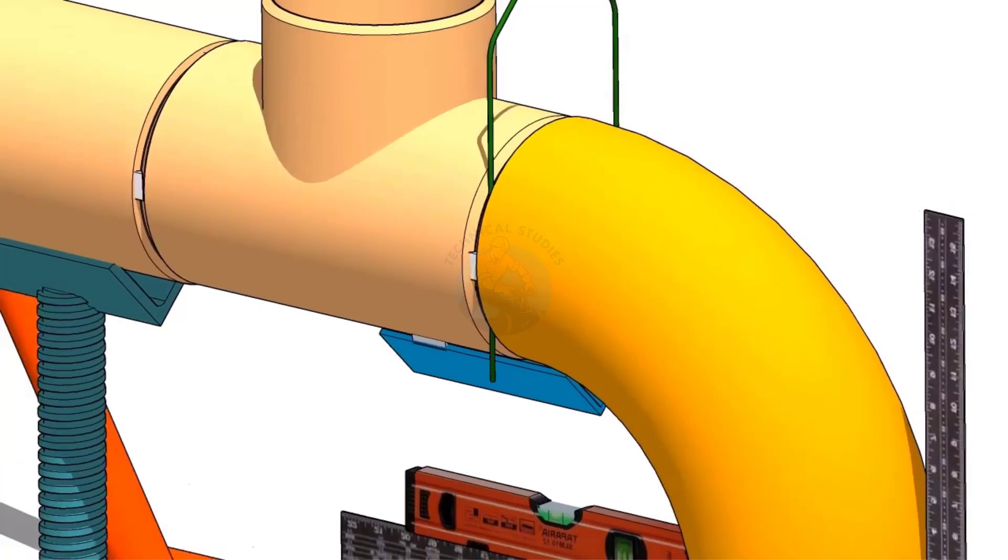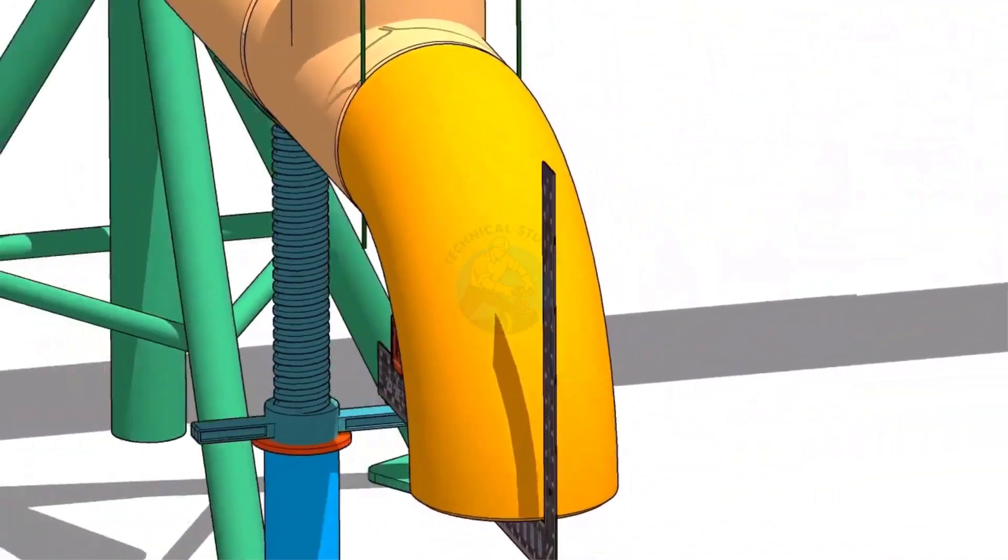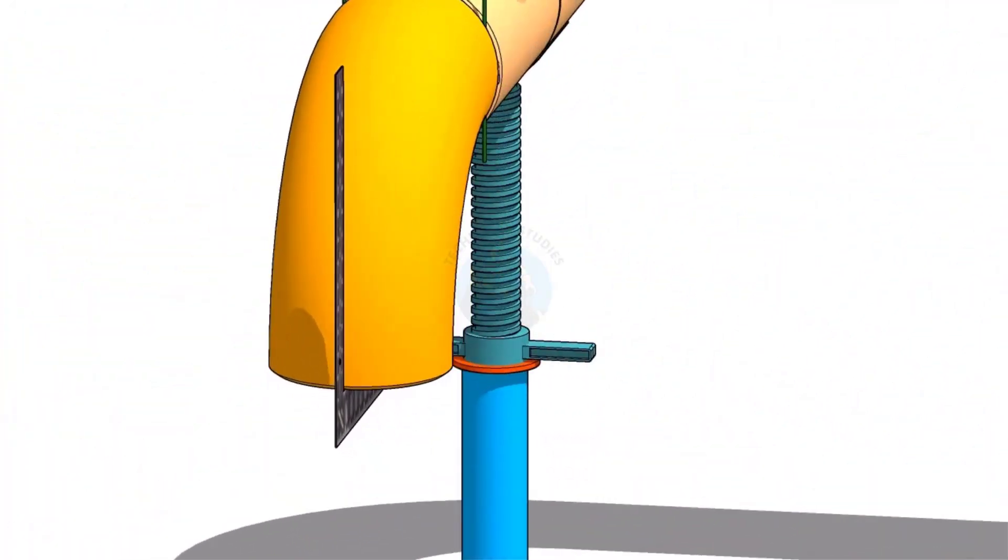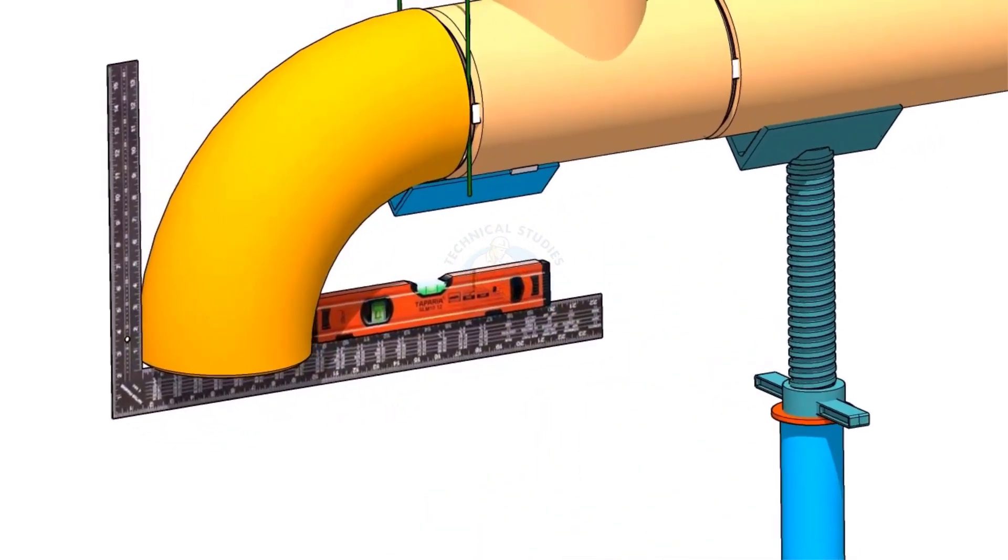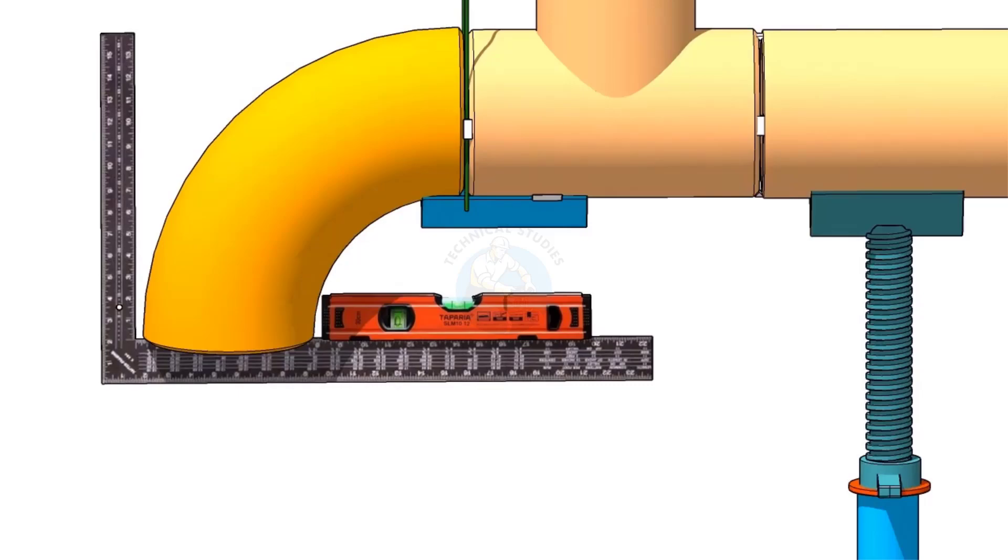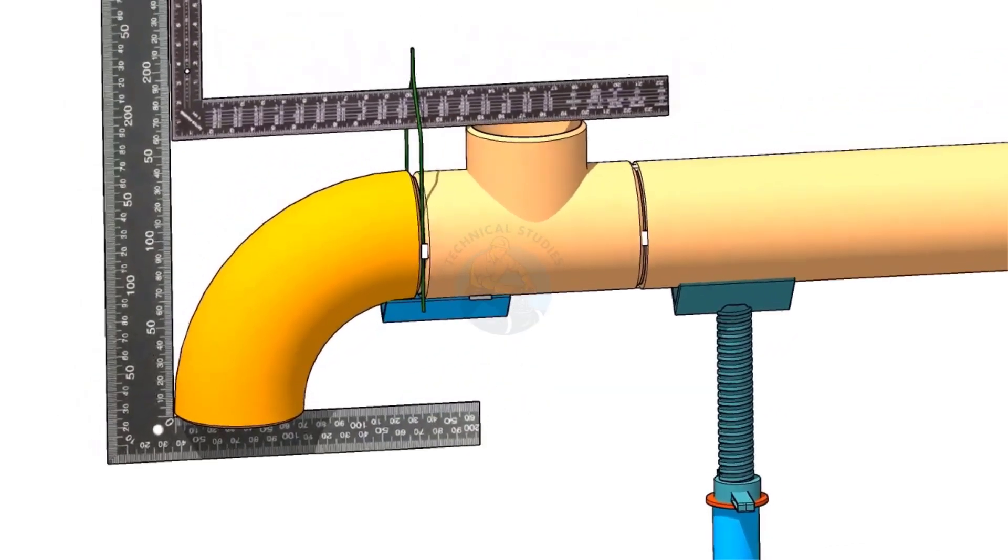Rotate the right angle and the spirit level longitudinally and maintain the elbow face level. Check that the branch face and the elbow face are right angle to each other.